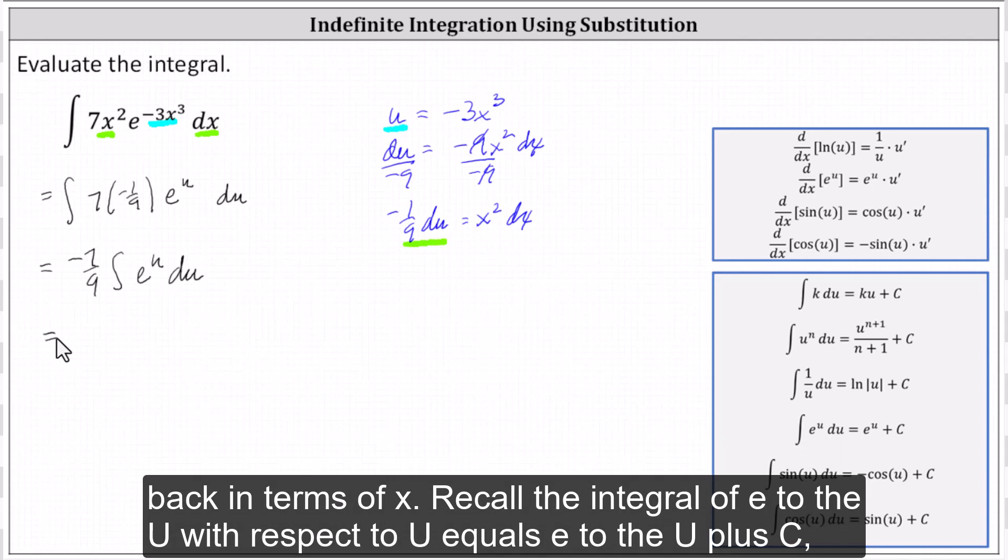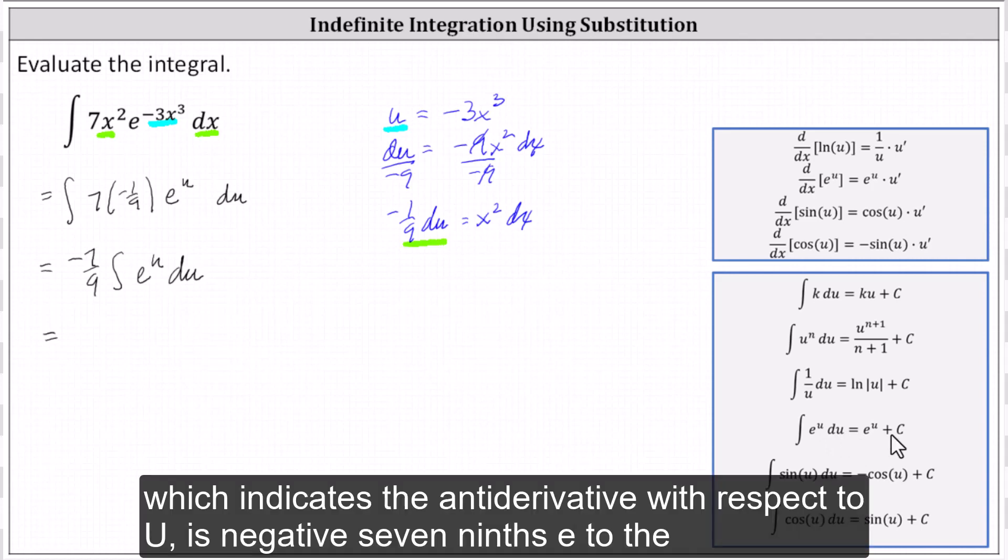Recall the integral of e to the u with respect to u equals e to the u plus c, which indicates the antiderivative with respect to u is -7/9 e to the u plus c.